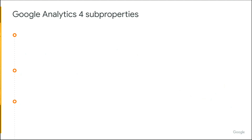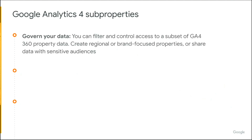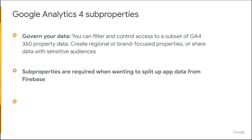We'd like to start with why we designed sub-properties to begin with, and that's to govern your data. Sub-properties were designed to filter a subset of your data and to give it to a subset of users. Most commonly, we see regional subsets of brands. You're also going to want to consider very heavily if you have an app or apps or not. Apps have a limitation where an app can only be linked with one GA4 property, and so if you do need a subset of app data to go to any other team, you're going to need to use a sub-property.